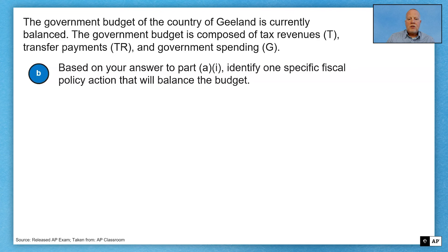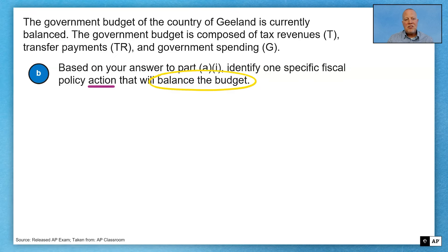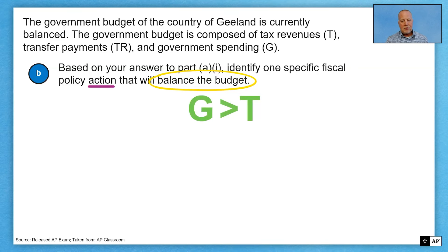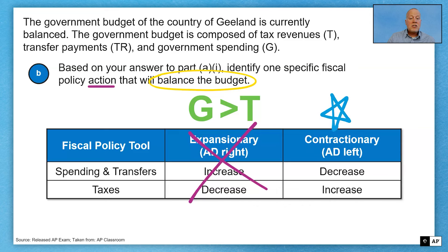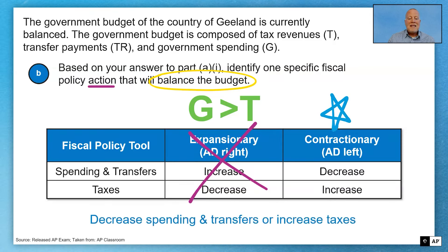Part B: based on your answer, identify one specific fiscal policy action that will balance the budget. Remember, action means an actual action. They're trying to balance the budget — government spending exceeds tax revenue. The only way to do that is to either decrease spending and transfers or increase taxes. That's a contractionary policy, and in doing so, it brings the budget back into balance. Your answer must be either decrease spending and transfers or increase taxes.